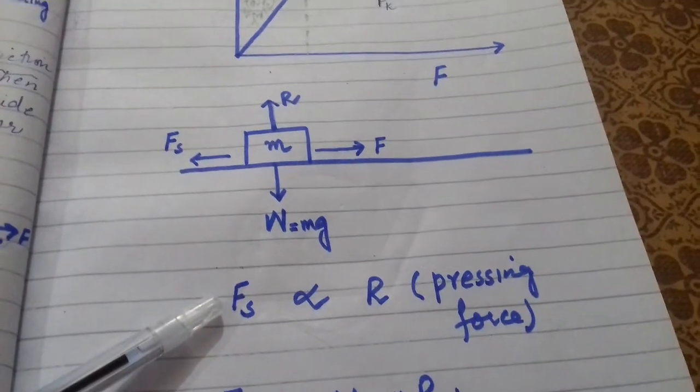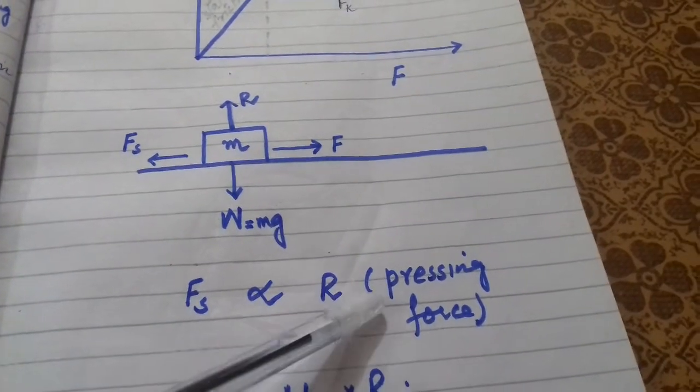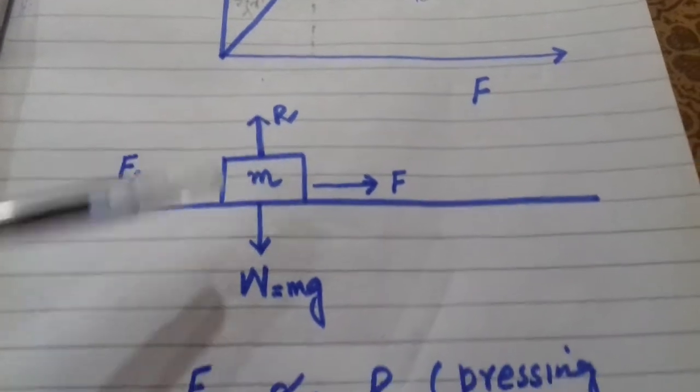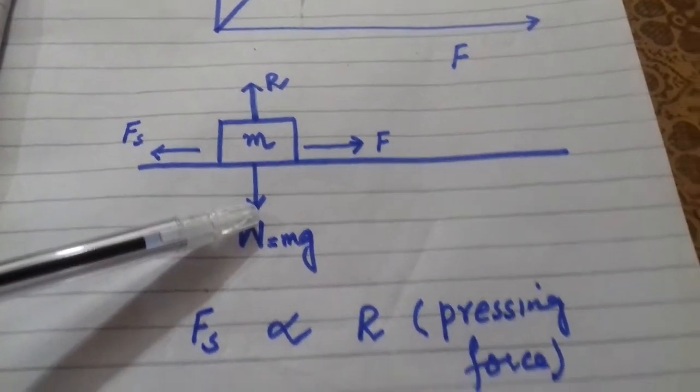The limiting force of static friction is directly proportional to the reaction. The reaction is balanced by the weight of the body - the pressing force equals the reaction.